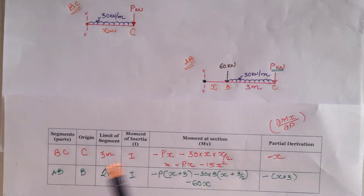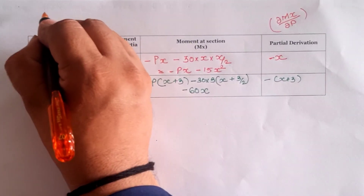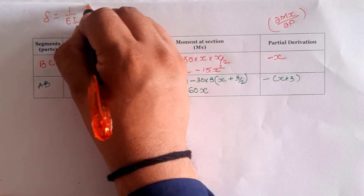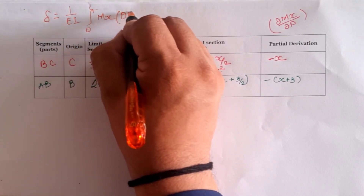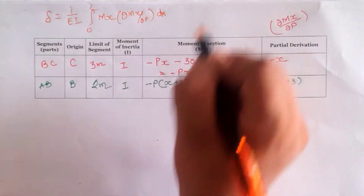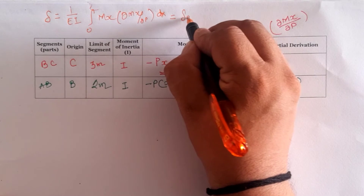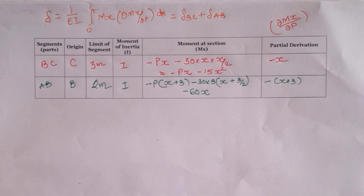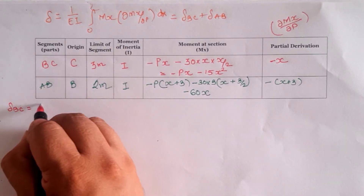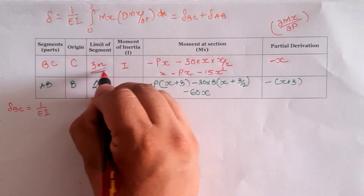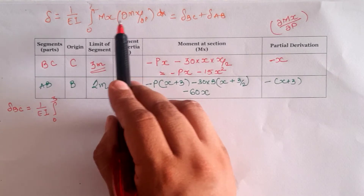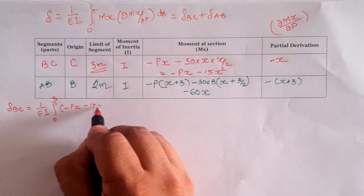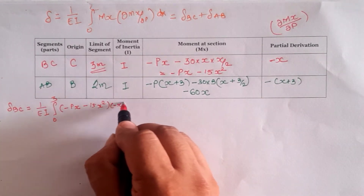Going ahead for the calculation of deflection using the tabular form, according to Castigliano's theorem: δ = (1/EI) ∫₀ᴸ M(x) · (∂M/∂P) dx, and we have two segments. By superposition, the total deflection is δ_BC + δ_AB. Focusing on the B to C span: (1/EI) with limit 0 to 3, and M(x) · ∂M/∂P gives (−Px − 15x²)(−x) dx.